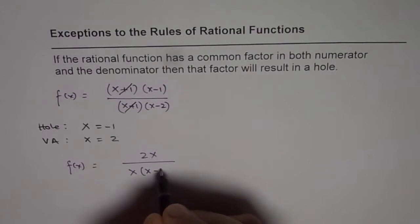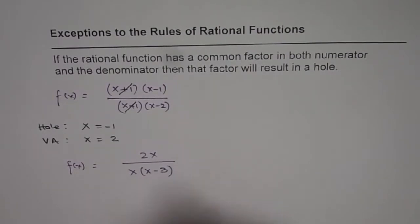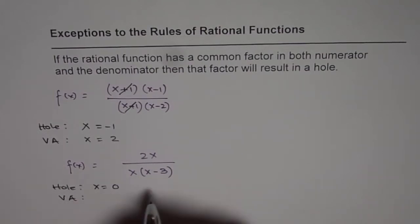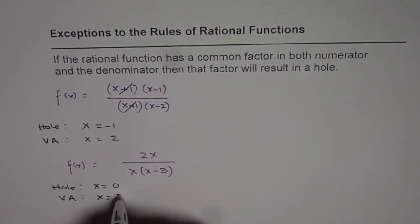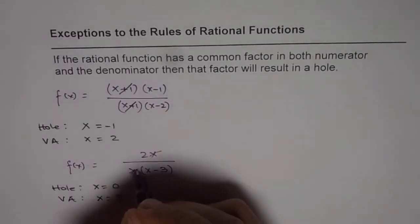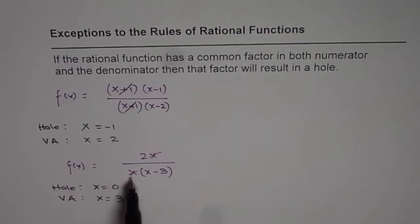Let us say we have this function x times x minus 3. Here also, we are going to have a hole at x equals 0. So in this case, we have a hole at x equals 0 and we have a vertical asymptote at x equals 3. Reason being that we have a common factor x in numerator and denominator. So it is indeed a restriction, but that restriction leads to a hole.